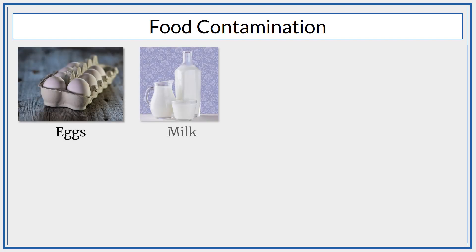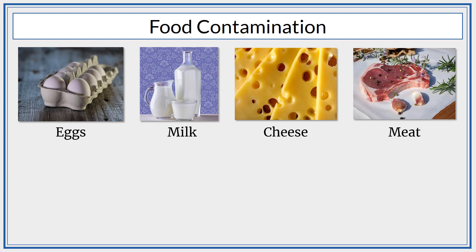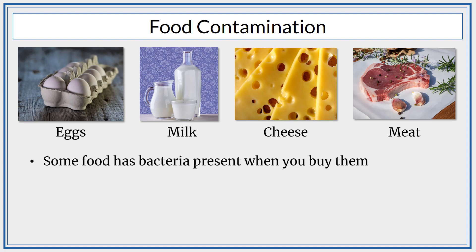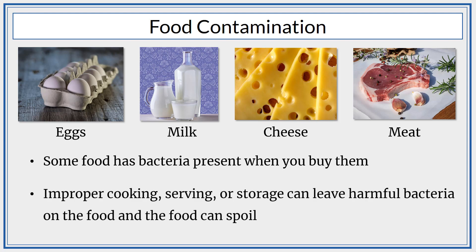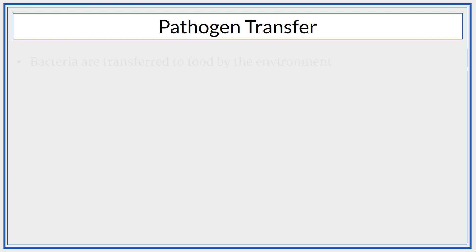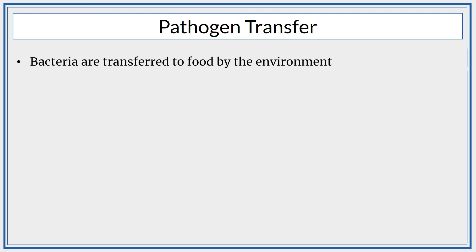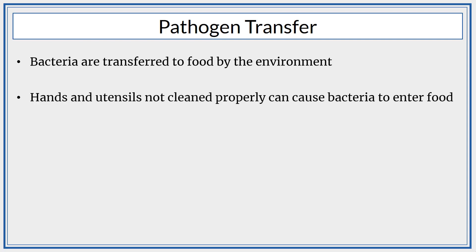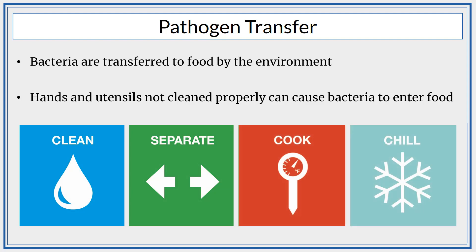Foods like eggs, milk, cheese, and meat are not sterile, meaning that they already have bacteria present when you buy them. Because bacteria are already present in a lot of foods, improper cooking, serving, or storage can leave harmful bacteria on the food or allow bacteria to multiply quickly and cause it to spoil. Bacteria are also transferred to food — someone preparing food without wearing gloves or without properly washing their hands can transfer bacteria around the kitchen. Utensils and surfaces not cleaned after being used can also cause bacteria to enter food. This is why it is important to clean, separate, cook, and chill food to stop the spread of pathogens that can cause food poisoning.